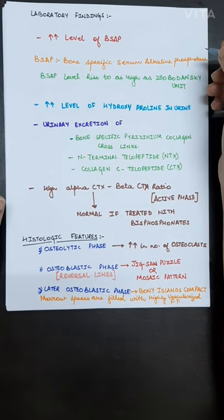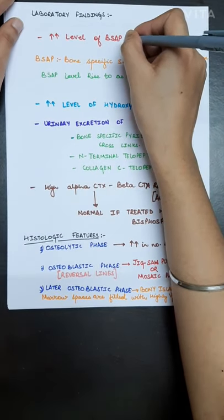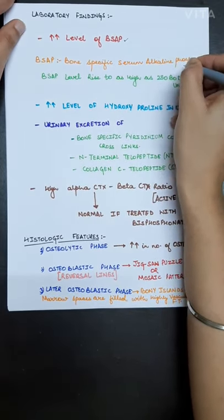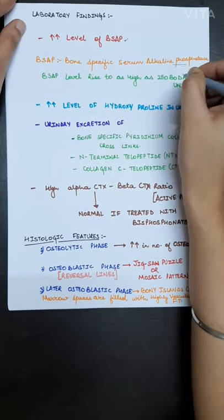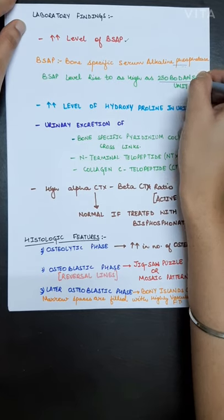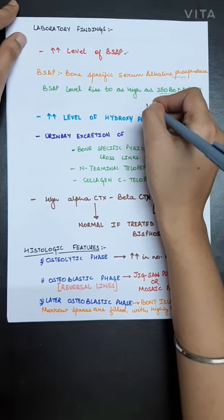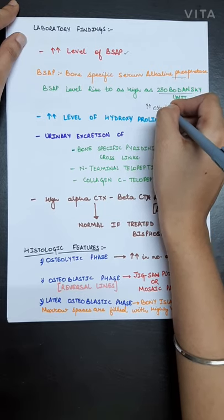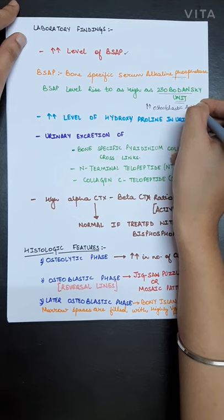Now, the lab findings of Paget's disease. There is an increased level of BSAP, that is bone specific serum alkaline phosphatase. The level rises as high as up to 250 Bodansky units when there is an increased osteoblastic activity.